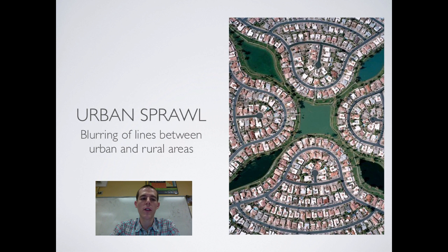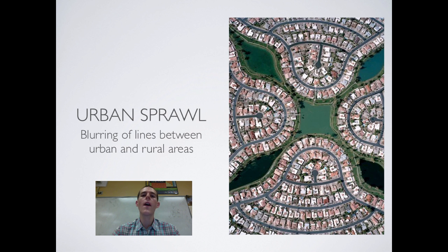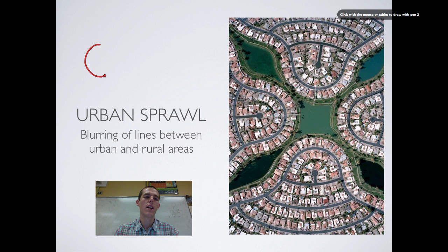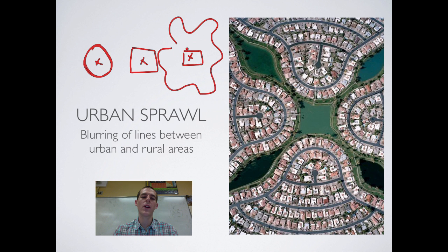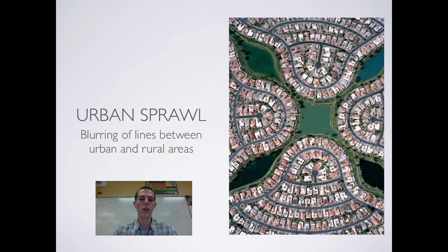Urban sprawl is technically a blurring of lines between urban and rural areas. This is where a city grows from the downtown area outward and outward, and it starts to grow into country areas and farmland areas, with some specific development characteristics. You could think of urban sprawl as being like a bug that got smashed — traditionally your city was a nice circular or square layout with the downtown in the center, but urban sprawl makes it look more like a squished bug, with growth spreading out into farmland, forest, desert, and prairie land.